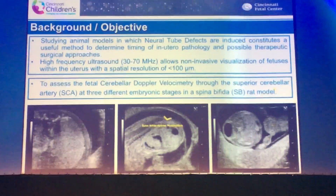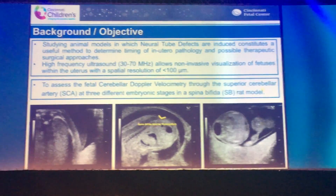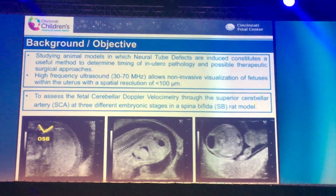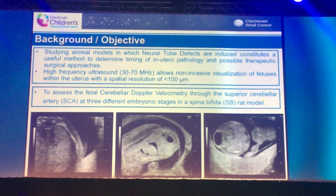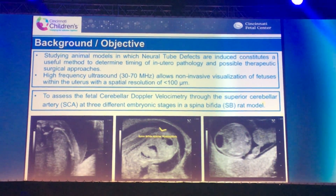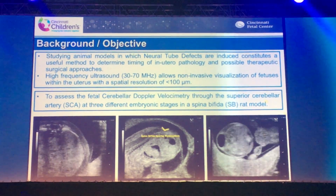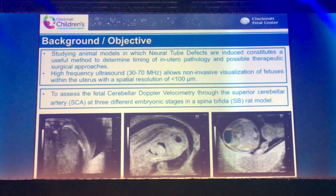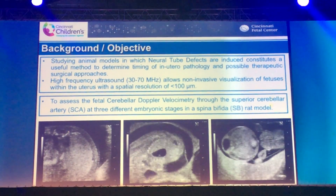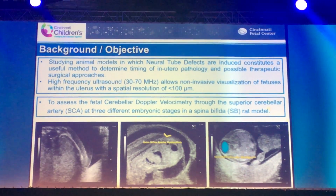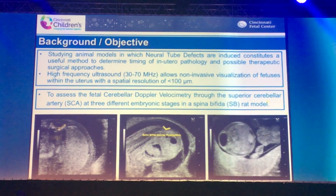We all know that the study of animals in which neural tube defects can be induced constitutes a really helpful method to determine timing of in utero pathology and possible surgical therapeutic approaches. That is why we use high-frequency ultrasound, which ranges between 30 and 70 MHz, allowing non-invasive visualization of small structures in fetuses with a spatial resolution of less than 100 micrometers.